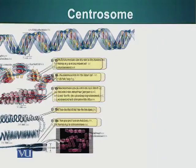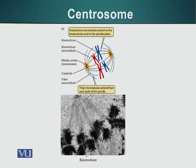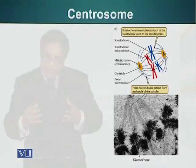Let's look at another important component of cell division: the centrosome and the microtubules that originate from it. There are two types of microtubules — the kinetochore microtubules that go and bind the chromosomes made up of DNA and protein, and other microtubules that are not bound to chromosomes. These microtubules are attached to the centrosome, also known as the microtubule organizing center.